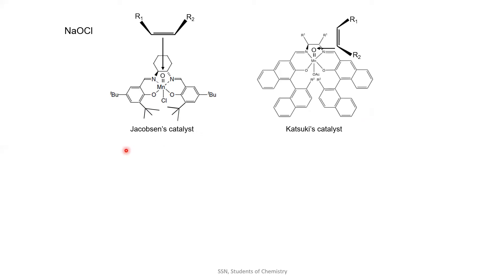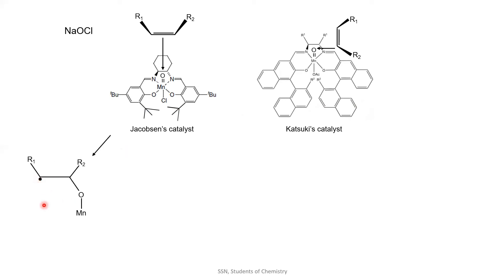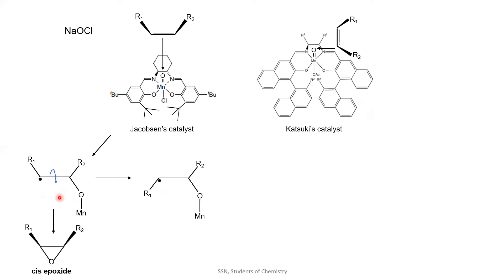In the case of Jacobson's catalyst, the reaction will proceed through a radical intermediate before the radical captures the oxygen. This is a C single bond C, which can freely rotate. The C single bond C will rotate to give two forms — from one form, the cis epoxide will be formed, and from the other form, the trans epoxide will be formed.